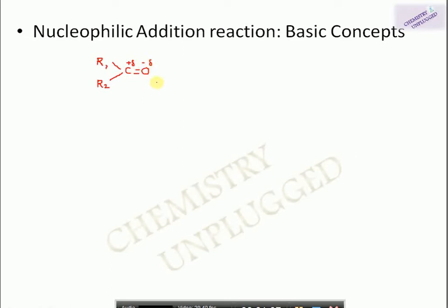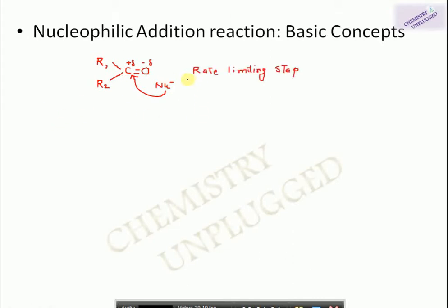Because of the presence of the oxygen atom, oxygen has a partial negative charge and carbon has a partial positive charge. So the nucleophile, which is electron-rich, will attack on the electron-deficient carbon. This is the rate-determining step of this reaction — the attack of the nucleophile on the carbon of the carbonyl group. If the carbonyl group is associated with electron-donating groups, the positive charge on carbon will be reduced.